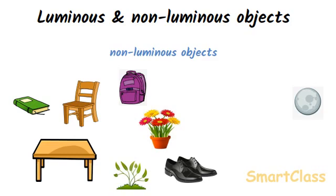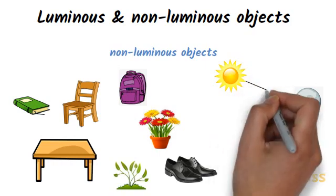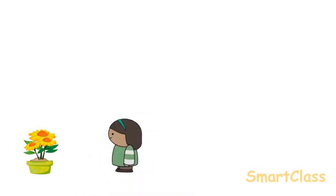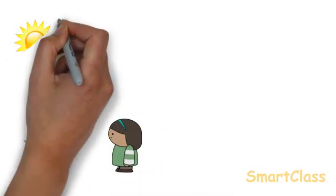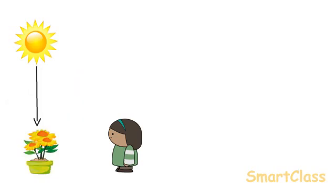For example, the moon is a non-luminous object which does not have its own light. However, we can see the moon because it reflects sunlight into our eyes. In fact, moonlight is the sunlight which is reflected from the surface of the moon. The planets can also be seen in the sky because they are reflectors of sunlight. Similarly, a flower is a non-luminous object. We can see a flower because it reflects sunlight falling on it. When sunlight reflected by a flower enters our eyes, we are able to see the flower.